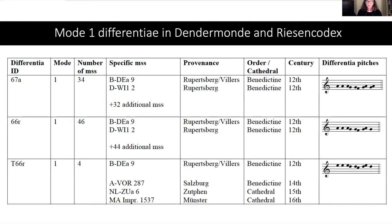We'll begin with mode 1. There are 12 mode 1 antiphons, and across these 12 antiphons, 3 differentiae are used. The first two are found in quite a few manuscripts: 67a in 34 manuscripts, and 66r in 46 manuscripts.